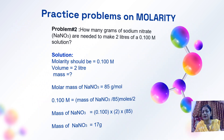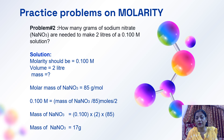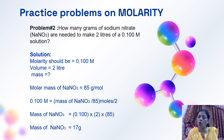Practice problem 2: How many grams of sodium nitrate (NaNO3) are needed to make 2 liters of 0.1 molar solution? Molarity is 0.1 molar and volume is 2 liters. The molar mass of sodium nitrate is 85 grams per mole. Putting all values into the formula, we calculate the mass of sodium nitrate. The answer is 17 grams.